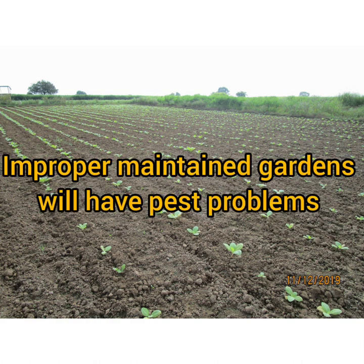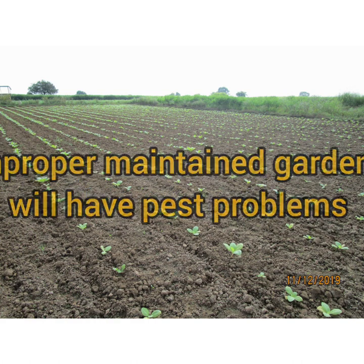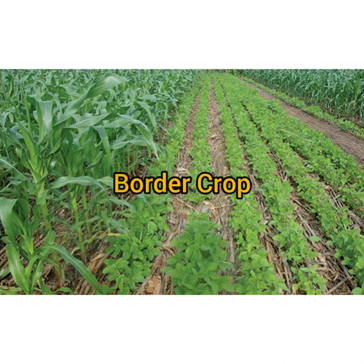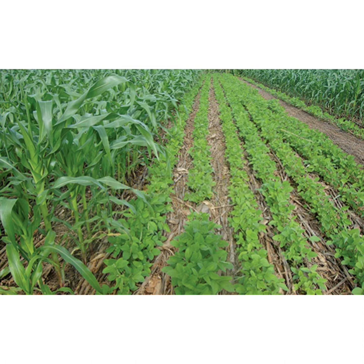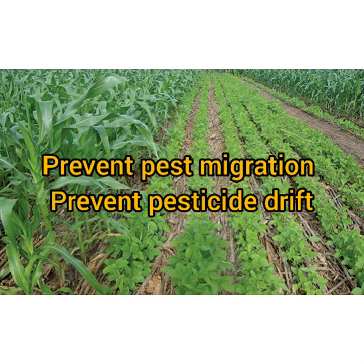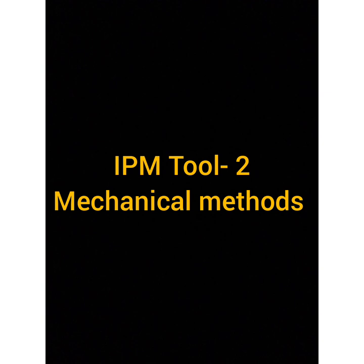The next method is field or bed sanitation — the bed must be free from weeds and old stubble, and cleaned properly. The next cultural method is border crop: another crop planted around the main crop which prevents pest migration and disease infestation.